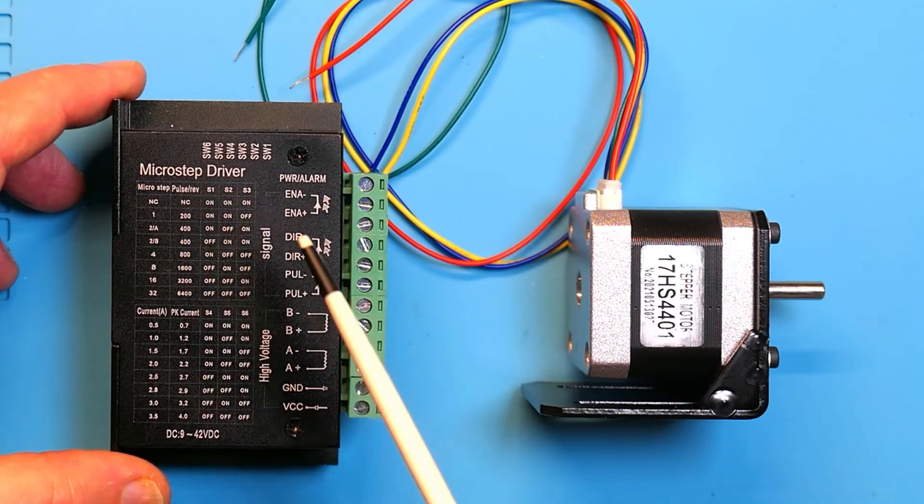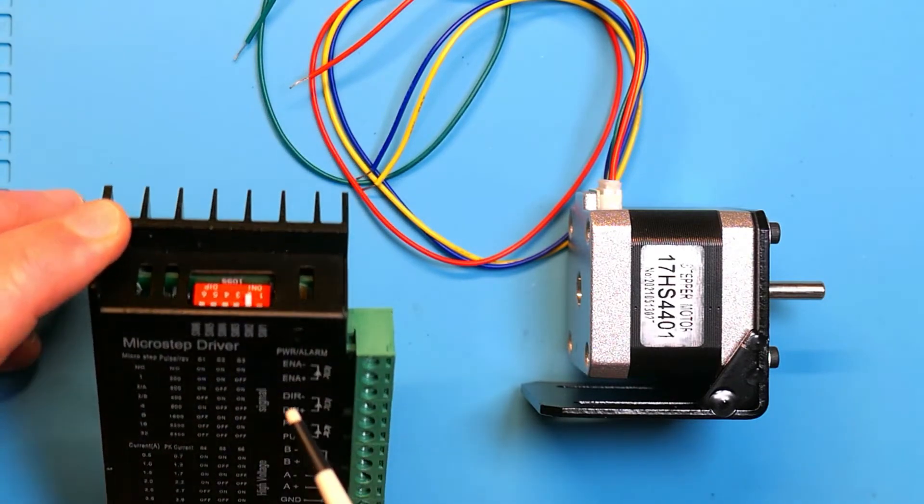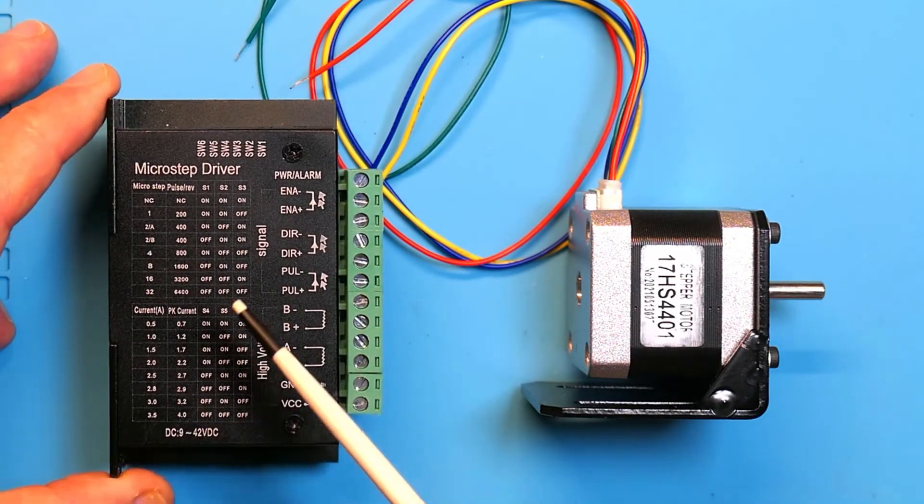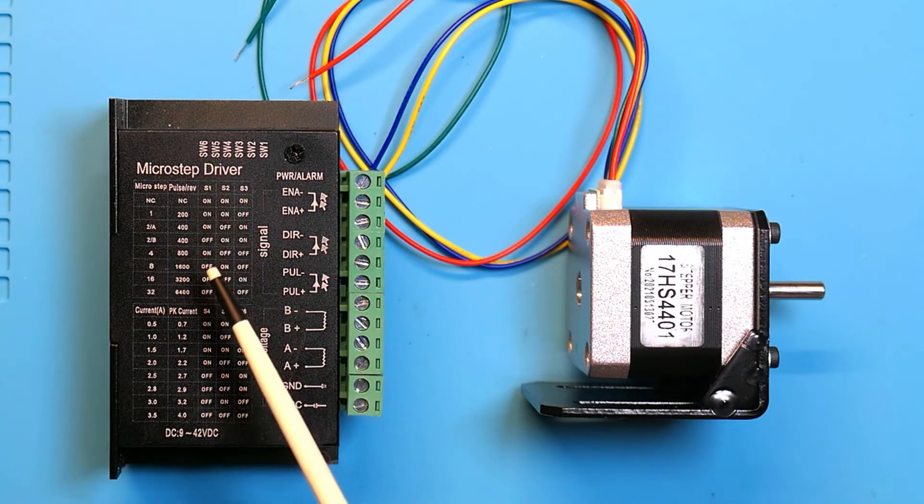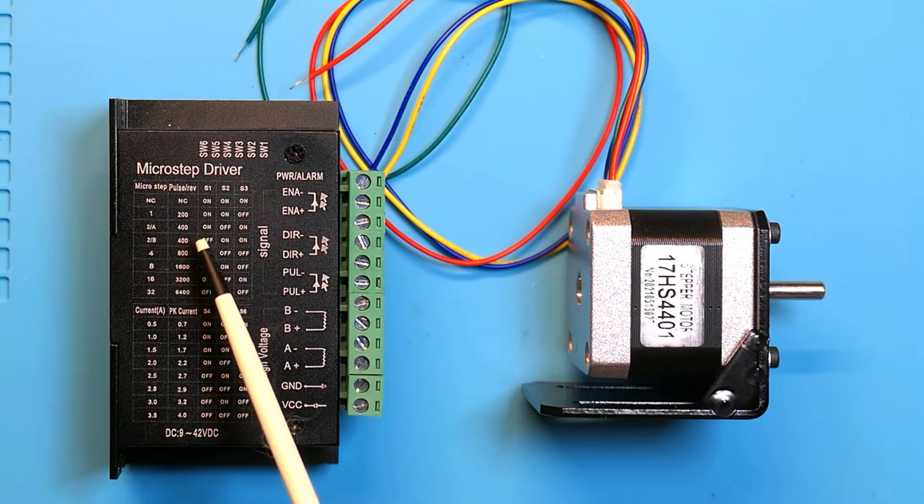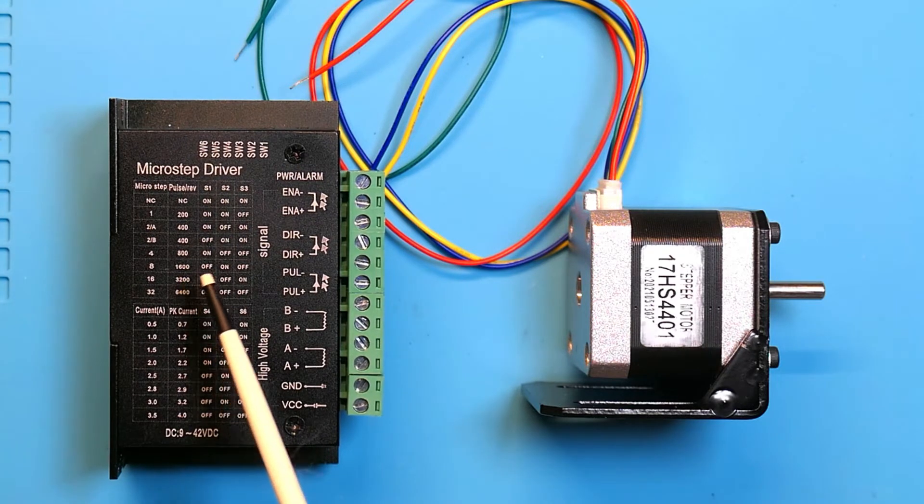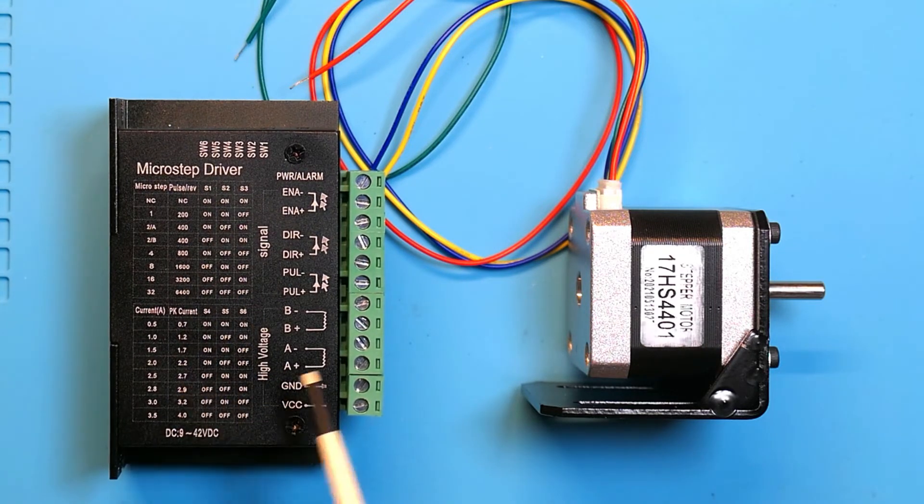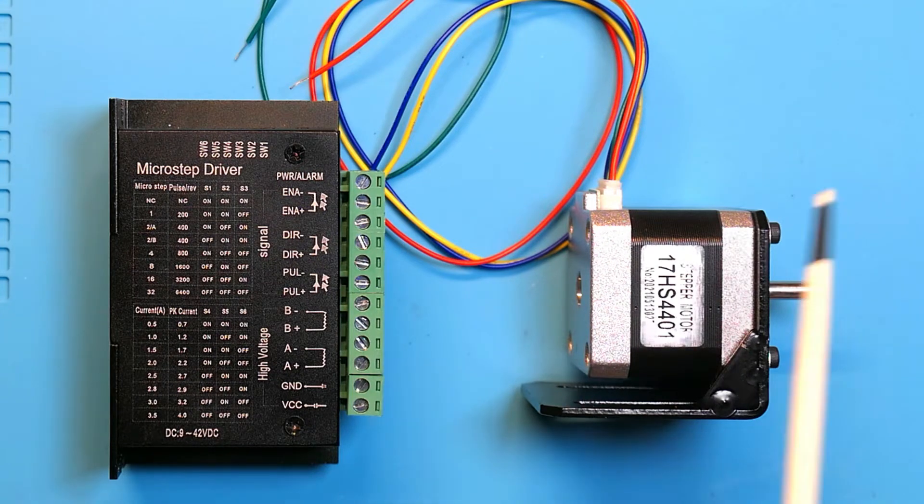And there's also some switches on the top of this you can see here. And there's two sets of switches, so the first set changes the number of pulses per revolution, and the second one is the current that's sent to the stepper motor, and we're going to find out how this works.